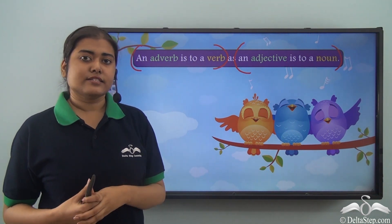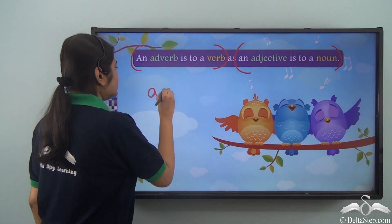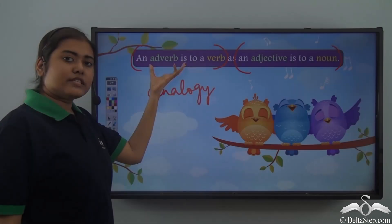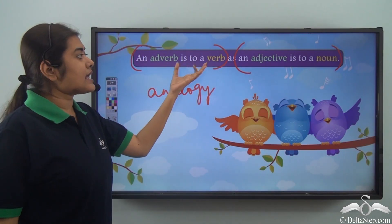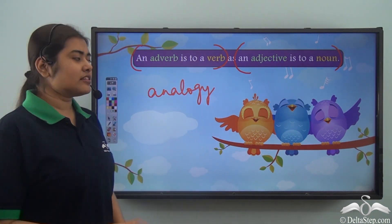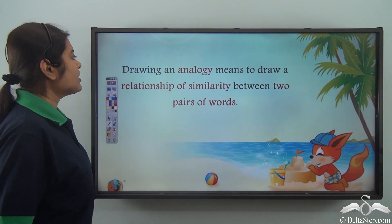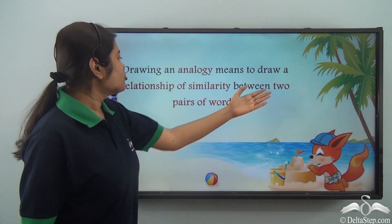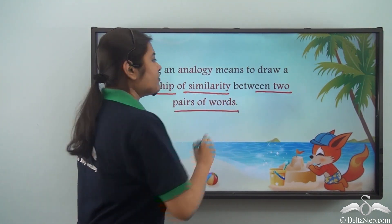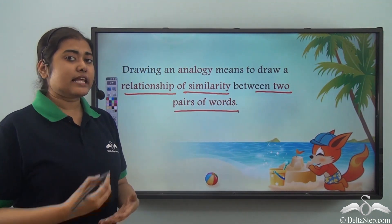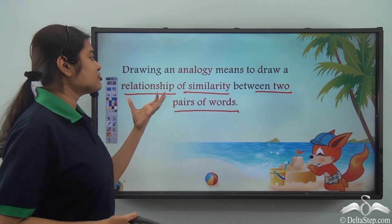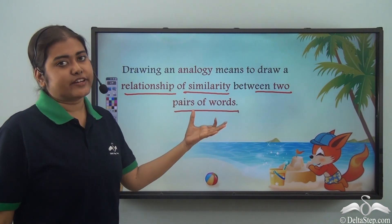That has a special name — it is called analogy. So this pair of words is analogical to this pair of words. Drawing an analogy means to draw a relationship of similarity between two pairs of words. Let us take up more such pairs of words and see how we can show a relationship of similarity between them.